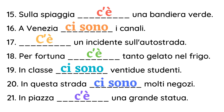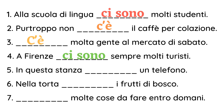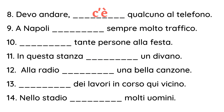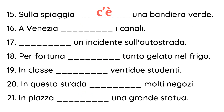Ci sono tante persone alla festa. In questa stanza c'è un divano. Alla radio c'è una bella canzone. Ci sono dei lavori in corso qui vicino. Nello stadio ci sono molti uomini. Sulla spiaggia c'è una bandiera verde. A Venezia ci sono i canali. C'è un incidente sull'autostrada. Per fortuna c'è tanto gelato nel frigo. In classe ci sono 22 studenti. In questa strada ci sono molti negozi.